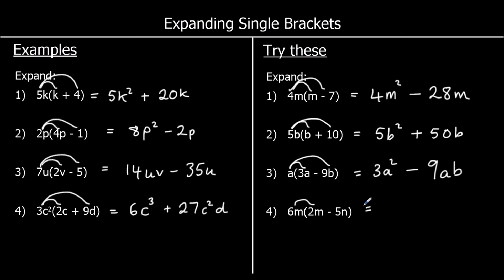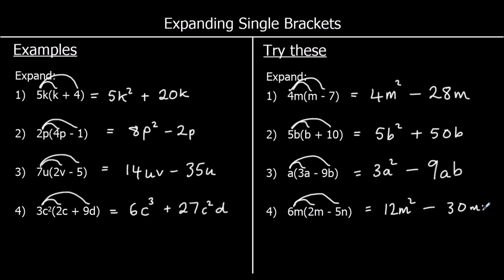And the last one: 6m times 2m is 12m². Positive times a negative is negative. 6 fives are 30, and times m times n we just write as mn. So negative 30mn.